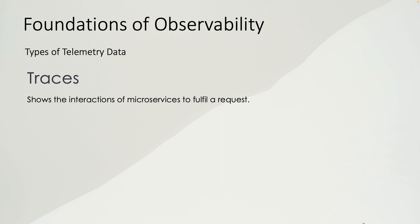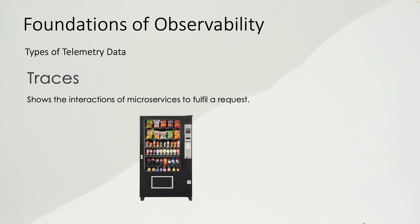What are traces? In a microservices-based system, a request has to go through many microservices to fulfill a purpose, and a trace shows the interaction of those microservices. For example, if a customer purchases a bag of chips using a credit card, the credit card information is sent to the vending machine, which sends it to the bank, which sends it to MasterCard, and the response comes back to the vending machine, which then dispenses the bag of chips. Any of these interactions can fail, so traces show us exactly where the request has gone and where it may have failed.